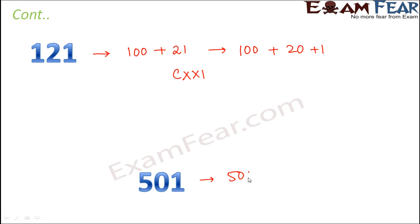501: this can be written as 500 plus 1. So what is 500? It is D, and 1 is I. So DI is 501.